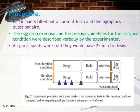Procedure: Participants filled out a consent form and demographics questionnaire. The egg drop exercise and precise guidelines for the assigned condition were described verbally by the experimenter. All participants were told they would have 25 minutes to design, 15 minutes to complete the final design, then a 10-minute interview and the egg drop test — total time 55 minutes. Participants were given a set of construction materials and could request more if needed. After the design session, the researcher cleaned up the workstation and replaced the original materials with a new set, this time without replacements.